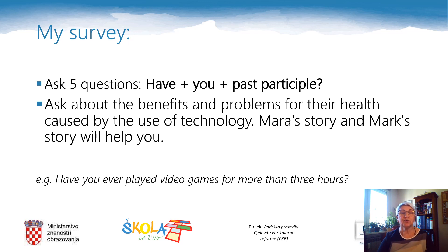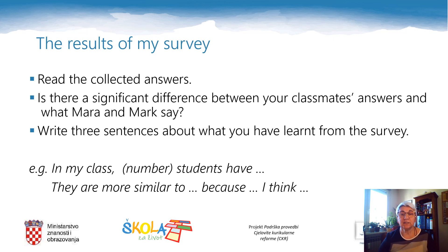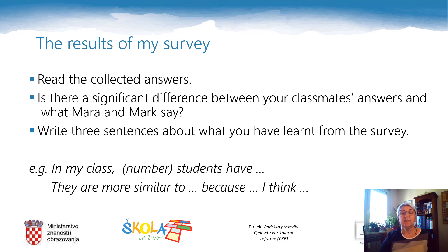When you send those five questions to your friends, you will wait for their answers to come back to you. When they answer your five questions, you will read their answers and compare what they say with what you think about the use of technology in everyday life. Then you will write three sentences: 'In my class, how many students have used technology…' — what they have used technology for, whether they are more similar to Mark or to Mara, and why. Then add your opinion about that kind of behavior.